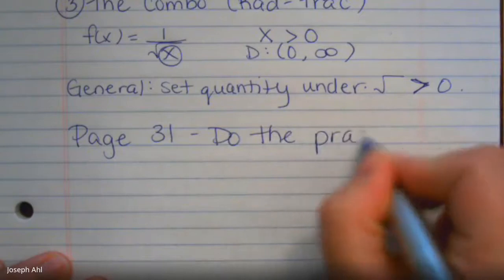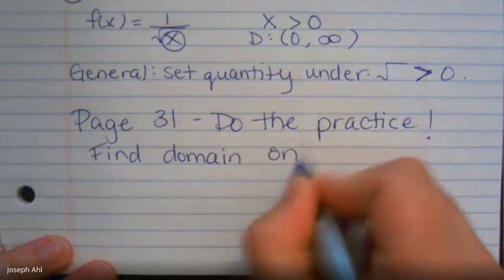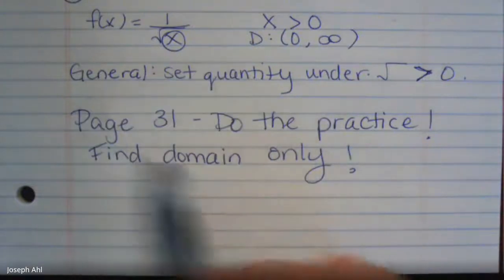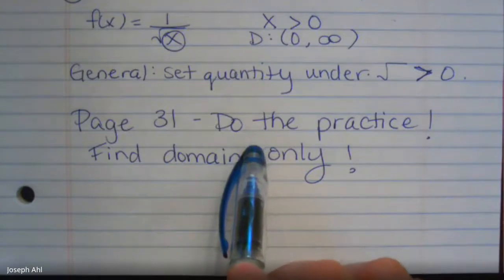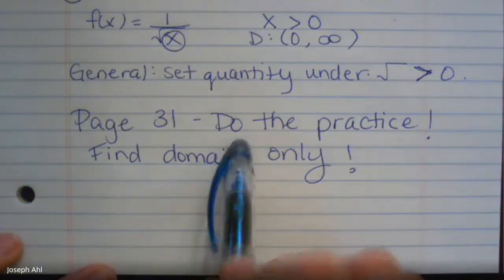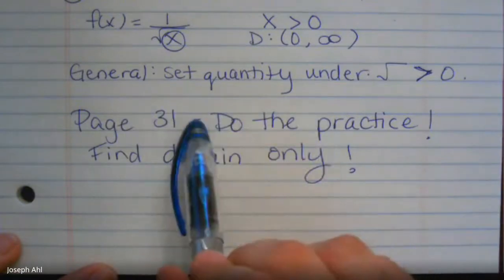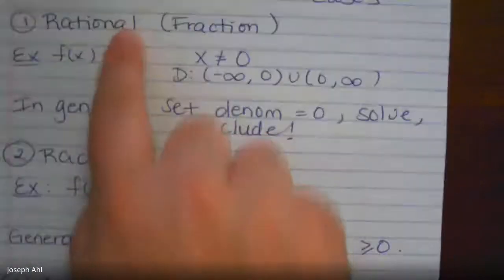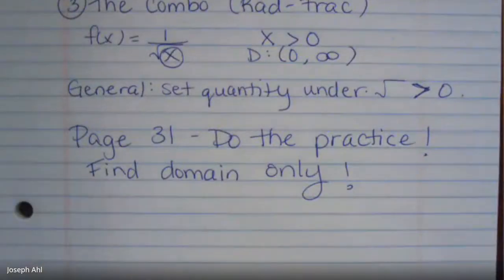There are 16 questions and you find the domain only — we don't care about range for now. Next time I see you in class, you'll break into socially distant groups or Google Meet groups, talk through the practice with partners, compare your domains, and discuss any discrepancies. If you have any questions in the meantime, let me know. Remember: it's only a restricted domain if it falls into one of these three cases — rational, radical, or the combo. Otherwise the domain is all real numbers. See you next time!